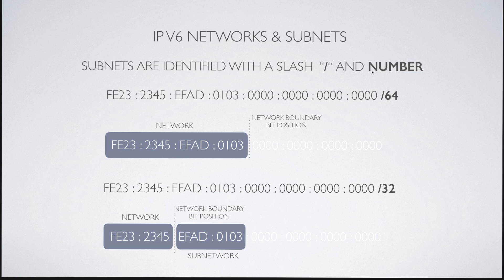Subnets are identified with a slash and a number at the back. Let's take the example. We've got our network address and the first 64 bits are identifying the network. So basically, the first 64 bits, FE232345EFAD0103 is the network, as shown below. The remaining bits in the back are the host number. And the demarcation point between the host and the network is at bit position 64.